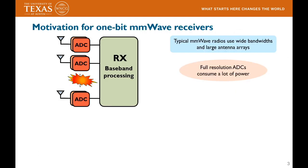I'll now start with some motivation on 1-bit mmWave receivers. Receivers in conventional MIMO systems use a pair of full-resolution analog-to-digital converters at every antenna. When such an architecture is used at mmWave, it results in a substantial amount of power consumption. The high power consumption is due to the fact that mmWave systems use wide bandwidths and large antenna arrays.